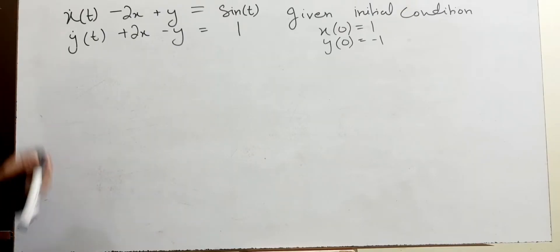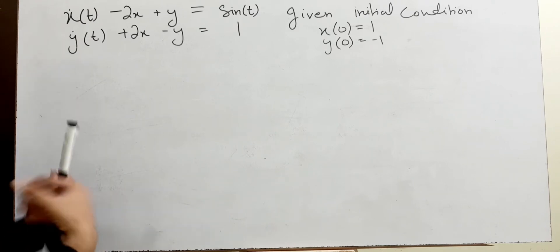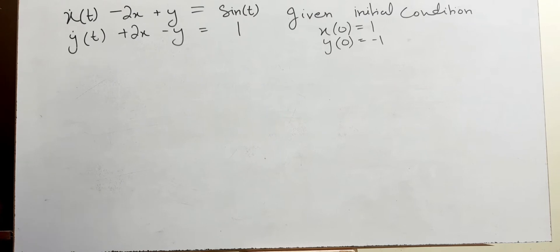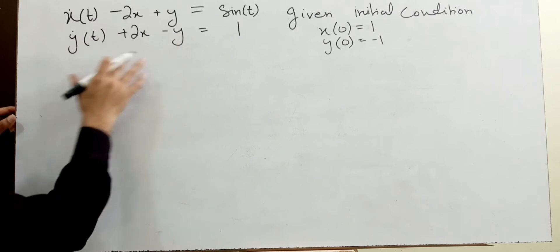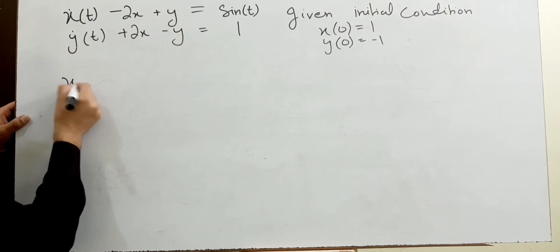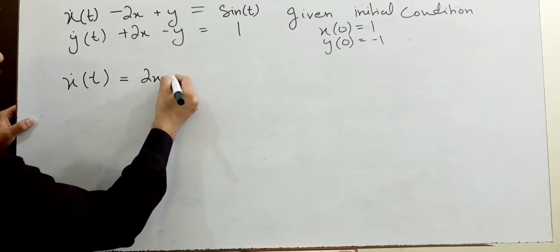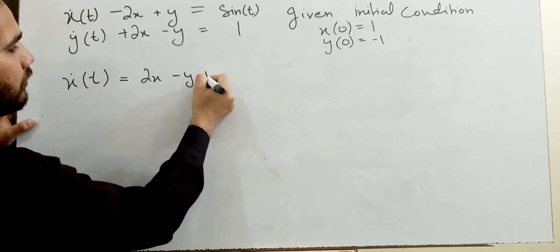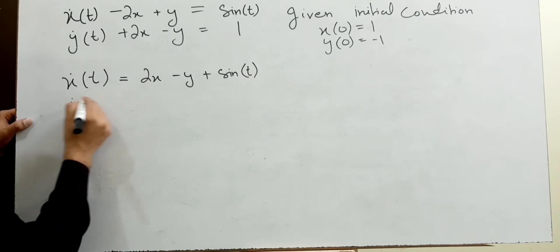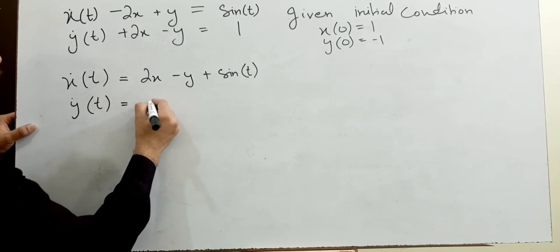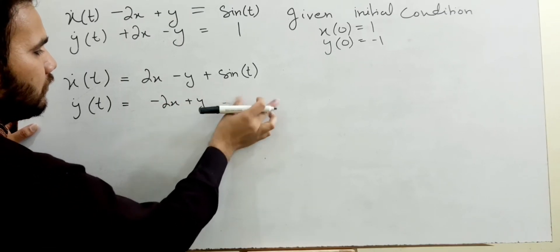We have one problem — one system of differential equations — and I want to solve this using Laplace in matrix form. I am writing this as: x-dot of t equals 2x minus y plus sine of t, and y-dot of t equals minus 2x plus y plus 1.